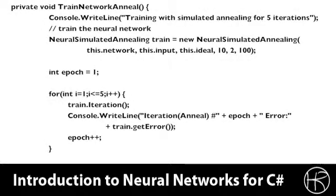The annealing loop is relatively simple. It is implemented in the train network anneal function. Here you can see it reports that we're about to train with simulated annealing for 5 iterations. We set up a basic simulated annealing algorithm called train, prepare to train, set the epoch to 1, and train over 5 iterations using a simple for loop. This is a relatively simple implementation of annealing — only 5 iterations — which is usually enough to get back propagation off the local minimum encountered when training on the S&P 500 data. We then return to the back propagation processing.